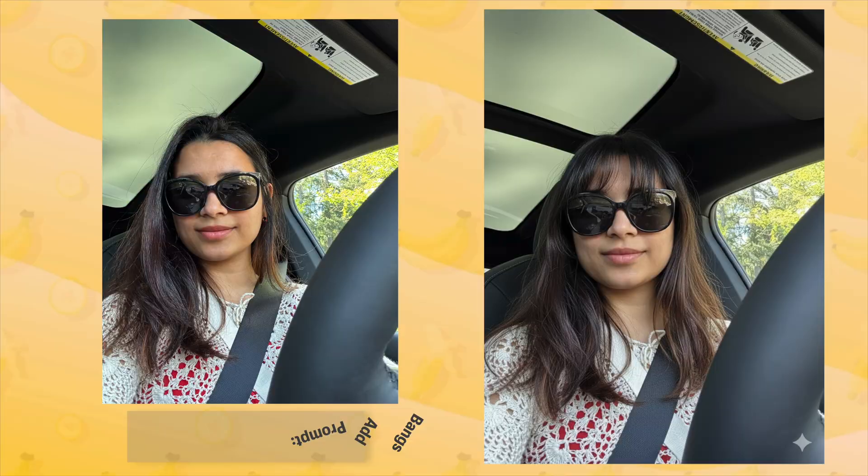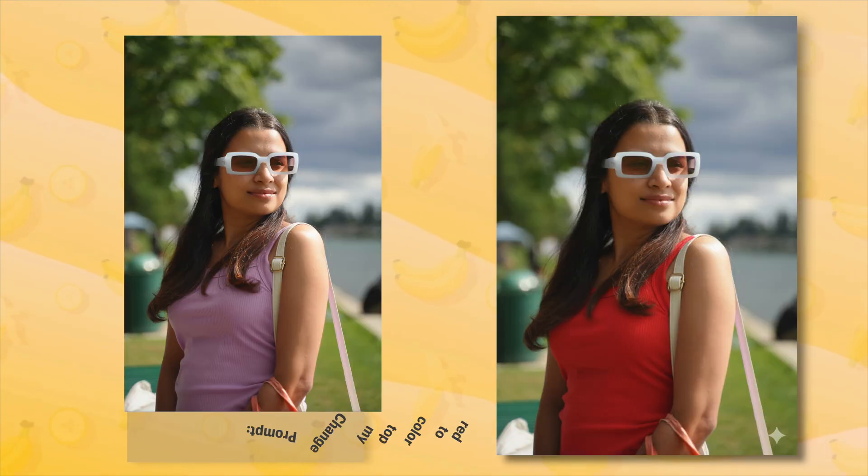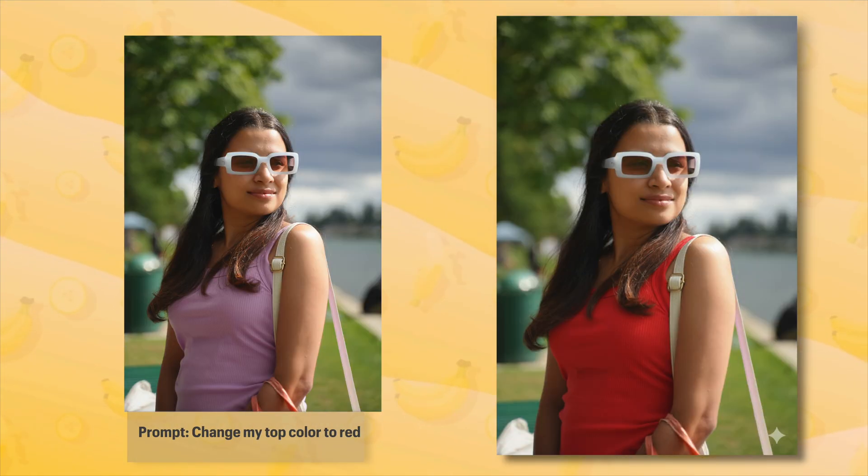Nano Banana solves this. It's an image-to-image model at its core. You start with an image and give it a text prompt that acts as your editing instructions. You can tell it: change this, add that, remove this person — and it just does it. It understands the context, the light, the composition, and makes the changes while keeping everything else perfectly consistent. It maintains the identity of the person or object you're editing — something other models have historically struggled with. And because it's so fast, the creative feedback loop is almost instantaneous: from idea to polished image in seconds, not minutes.